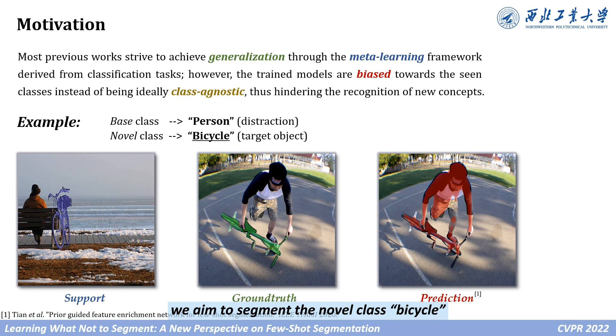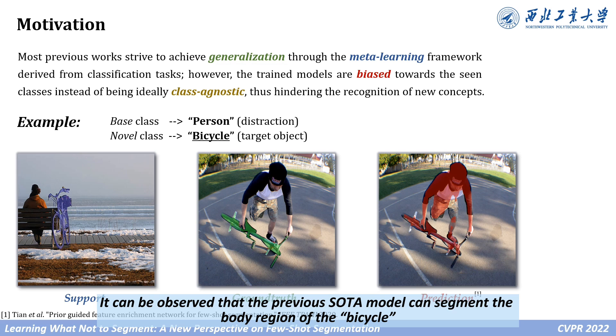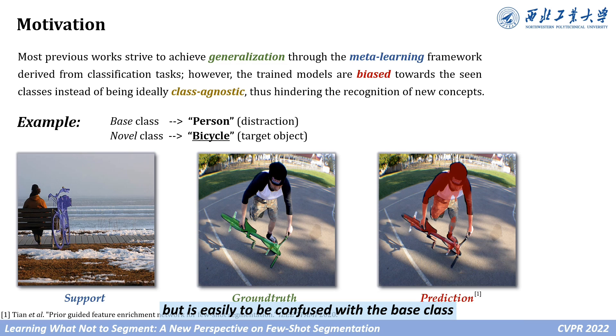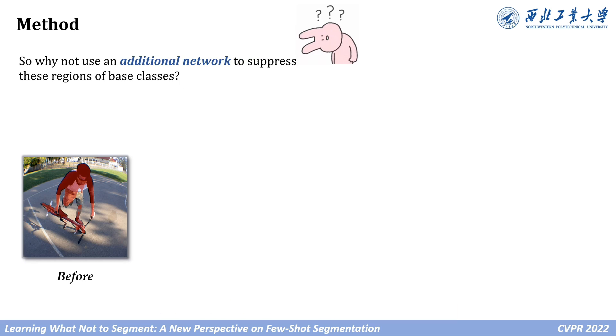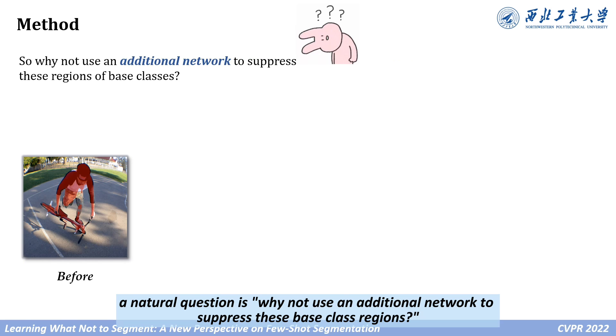we aim to segment the novel class bicycle, where the base class person is a distractor. It can be observed that previous SOTA models can segment the body region of the bicycle, but are easily confused with the base class. Based on this observation, a natural question is why not use an additional network to suppress these base class regions?